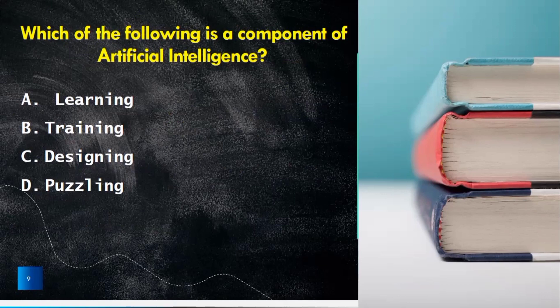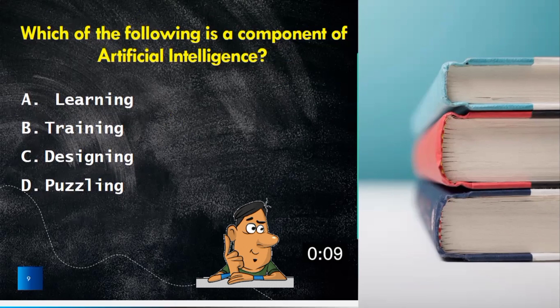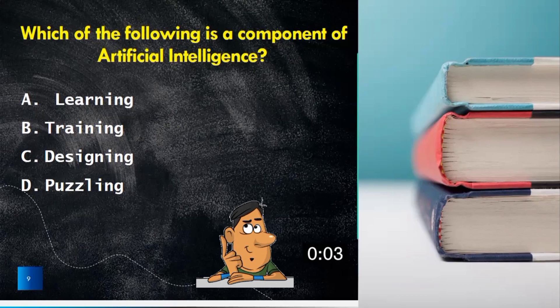The question number nine is which of the following is component of artificial intelligence? Learning, training, designing, puzzling. The right answer is learning.